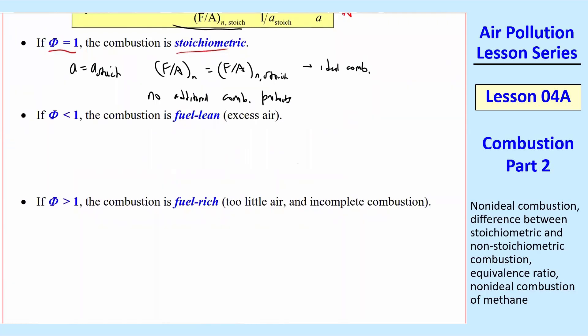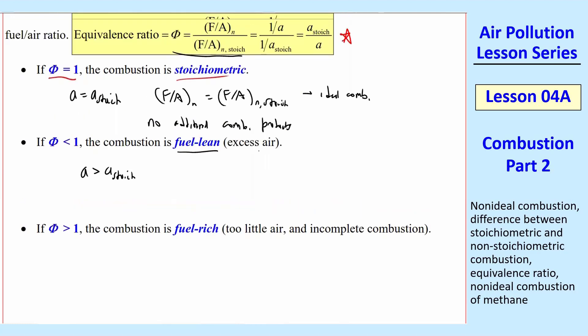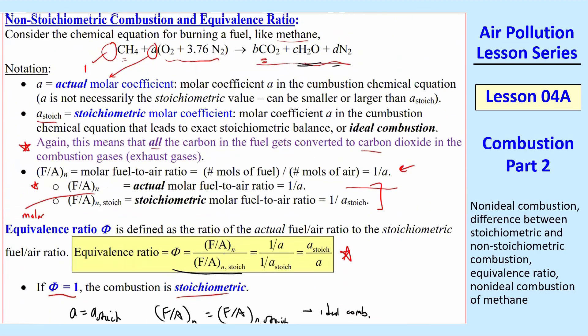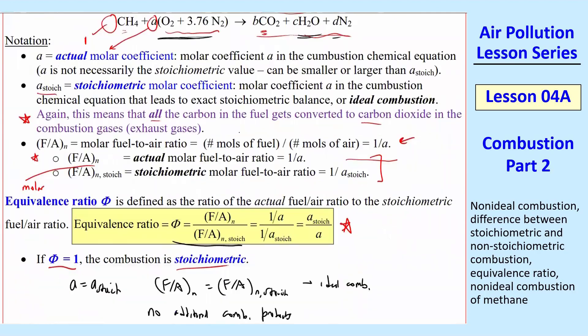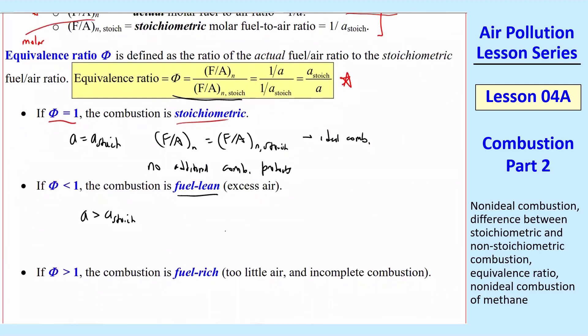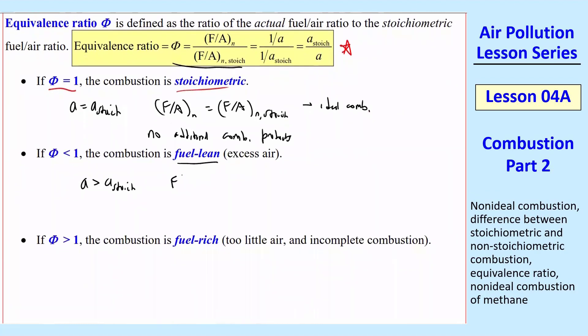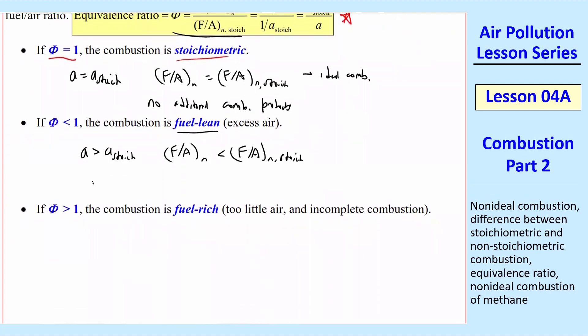What if phi is less than 1? This is called fuel lean. And what that means is A is greater than A stoic. So we have excess air because the A is bigger than it should be for stoichiometric. So we're putting in more air. And so this is called fuel lean or air rich, excess air. And then F over A N is less than F over A N stoic. And so it's not ideal. And we get some extra combustion products such as CO, maybe some NOx, NO something, some soot, alcohols, aldehydes, etc.